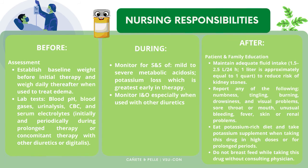During therapy, the nurse should monitor for signs and symptoms of mild to severe metabolic acidosis, potassium loss which is greatest early in therapy, and monitor input and output especially when used with other diuretics. After administration, the nurse should educate the patient and family on maintaining adequate fluid intake to reduce risk of kidney stones, and to report numbness, tingling, burning, drowsiness, and visual problems.